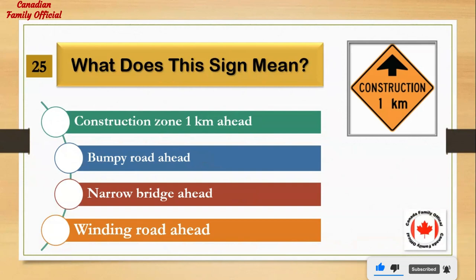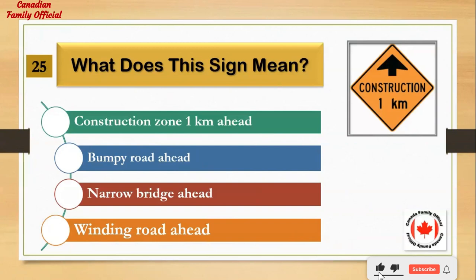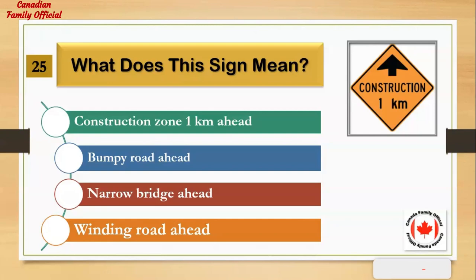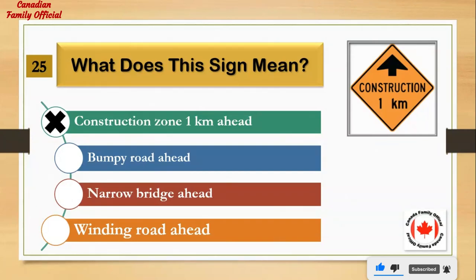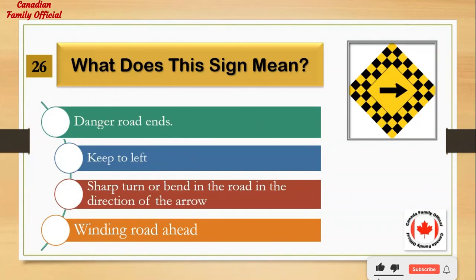What does this sign mean? Number 1: construction zone 1 km ahead. Number 2: bumpy road ahead. Number 3: narrow bridge ahead. Number 4: winding road ahead. And the answer is: construction zone 1 km ahead.